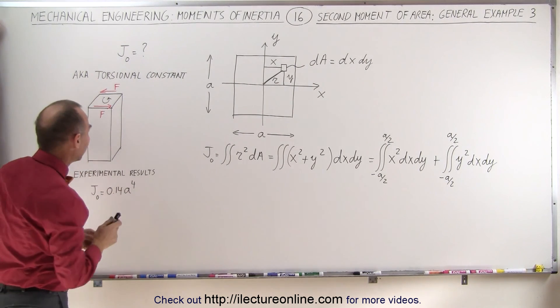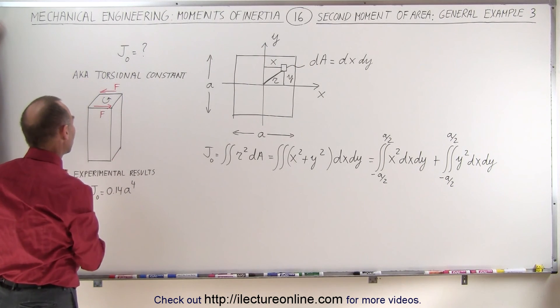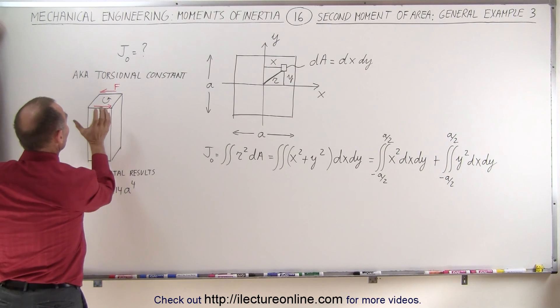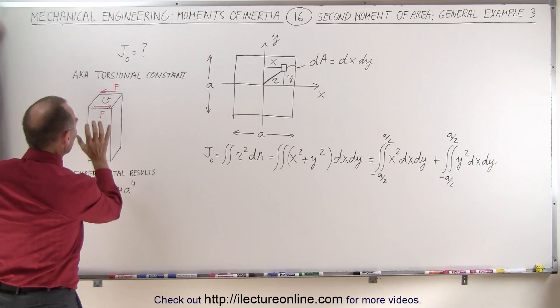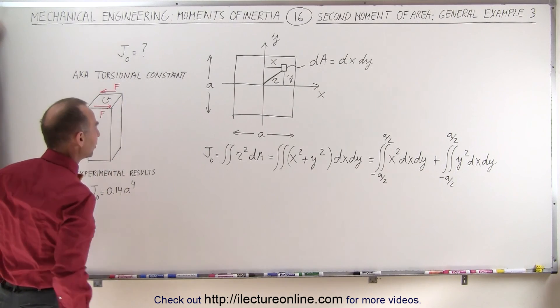There'll be a torsion there, and so we want to calculate the torsional constant that will then be necessary to figure out how much it resists that torsional, how much it resists that moment, the turning of the pillar in one direction versus the other side.